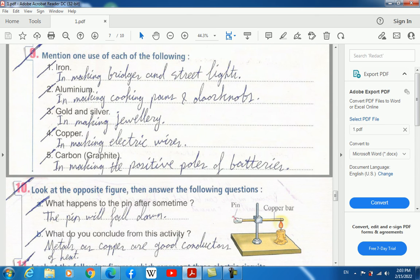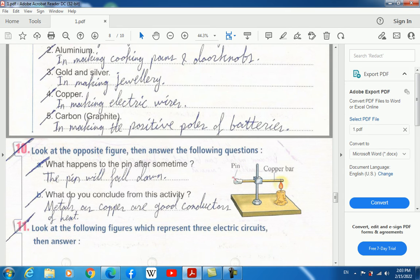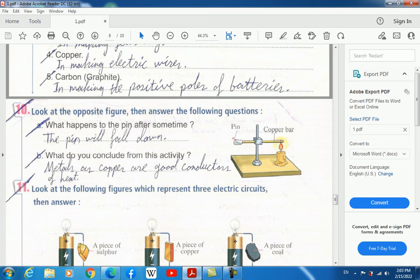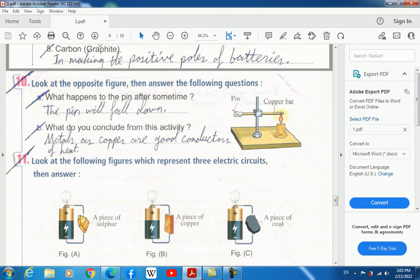Mention one use of each of the following: iron in making bridges and street lights; aluminum in making cooking pans and door knobs; gold in making jewelry; copper in making electric wires; carbon, which is graphite, is used in making the positive pole of batteries.